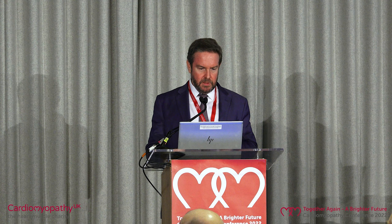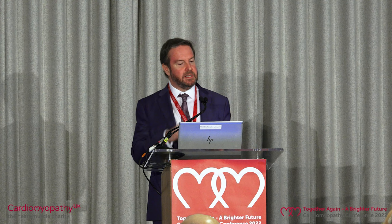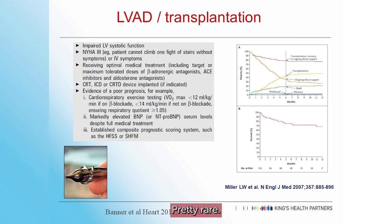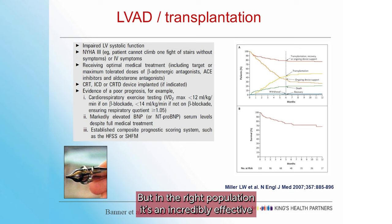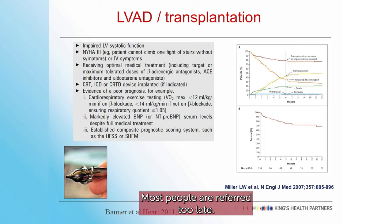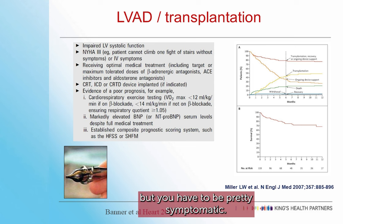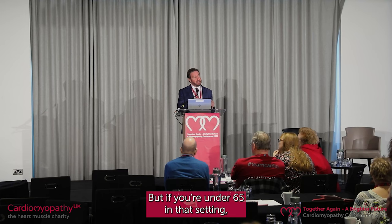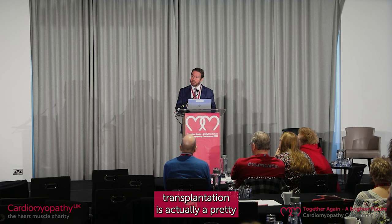The most extreme treatment for cardiomyopathy is left ventricular assist devices and transplantation — pretty rare, only about 100 or so transplants a year in the UK. But in the right population, outcomes at 10 years with transplant are very good. The key with transplantation is that you have to be referred early — most people are referred too late. You have to have single organ involvement, be pretty symptomatic despite all right therapy, but if you're under 65 in that setting, transplantation is actually a pretty good and effective treatment.